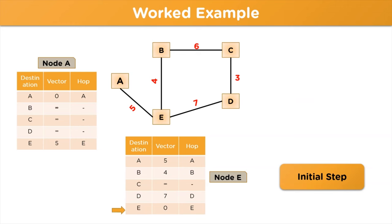Key points to remember: for the initial step, use only the node distances of immediate neighbors; nodes without a direct link have distance infinity. For the update step, use the vector table of only the neighboring nodes. To complete the update, roughly n-1 iterations are needed, where n is the number of nodes — for our 5-node model, that means 4 iterations. With this we have reached the end of the session. If you have any questions, ask them in the comment section below.